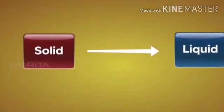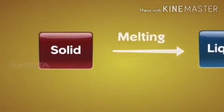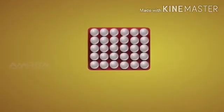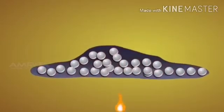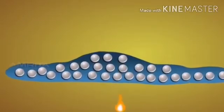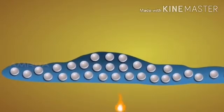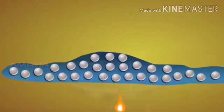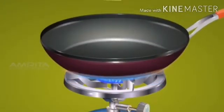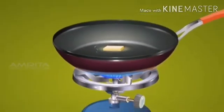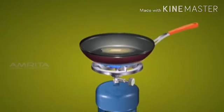A solid changes its state to liquid by melting. Upon heating solids, the space between the particles increases and the particles move freely to form liquid. When a piece of butter is placed on a frying pan and heated, the piece of butter slowly loses its shape and changes to liquid.